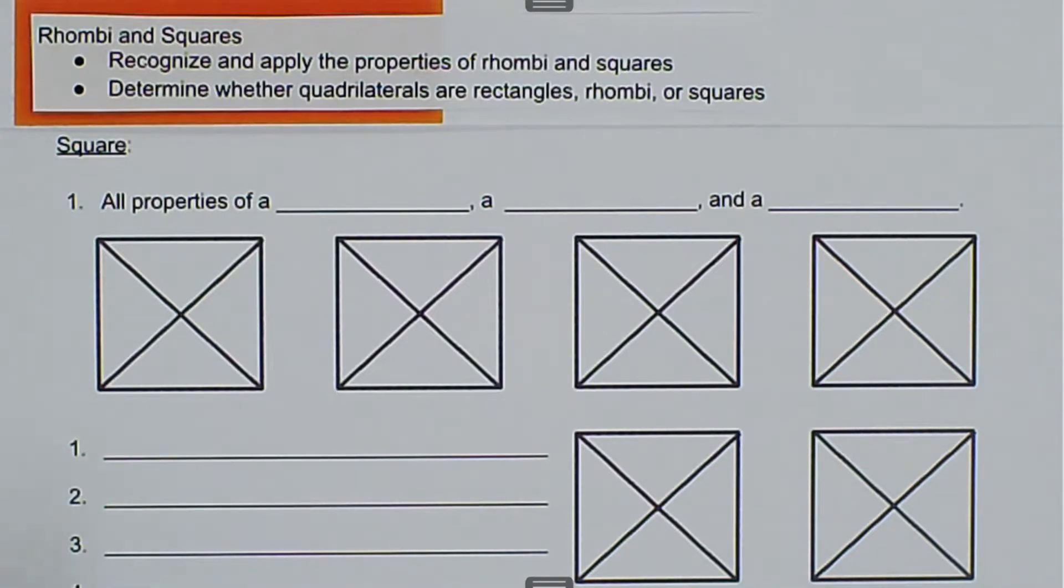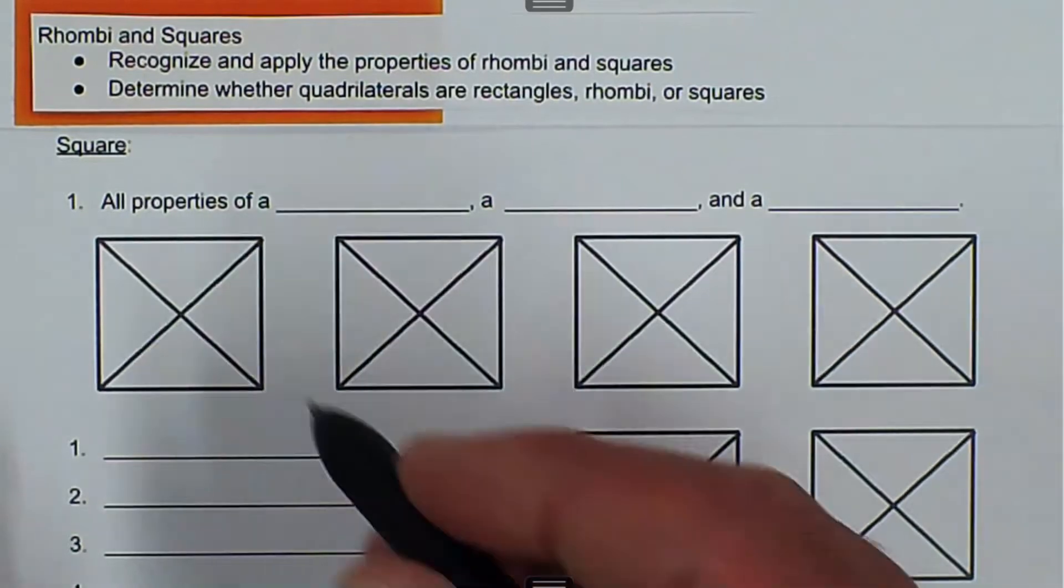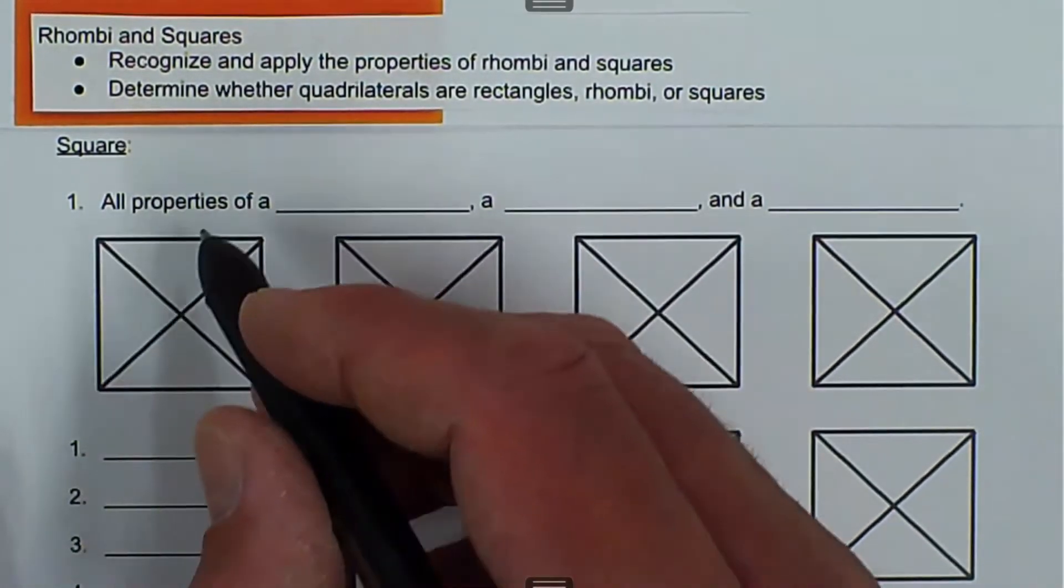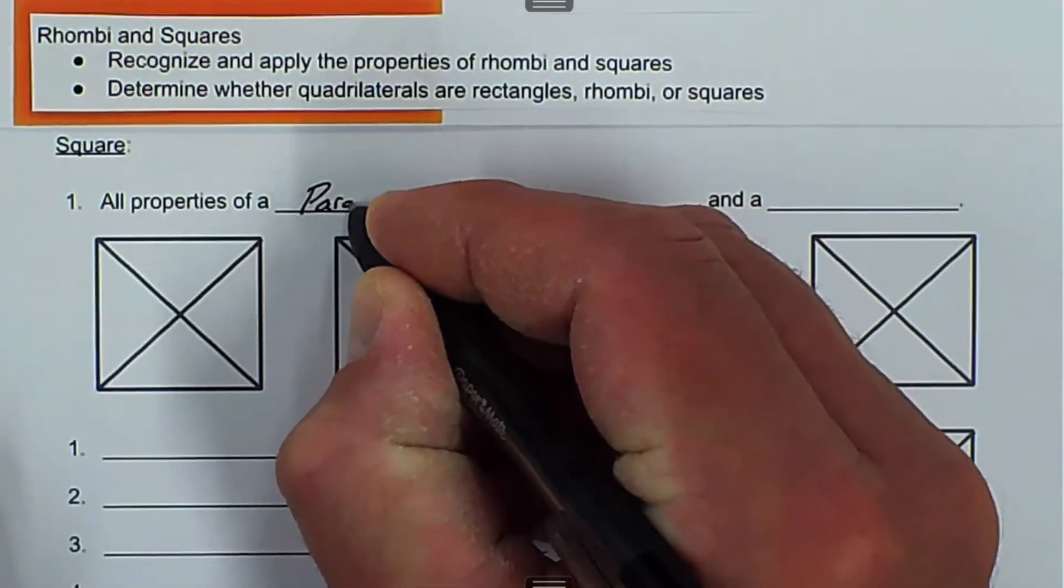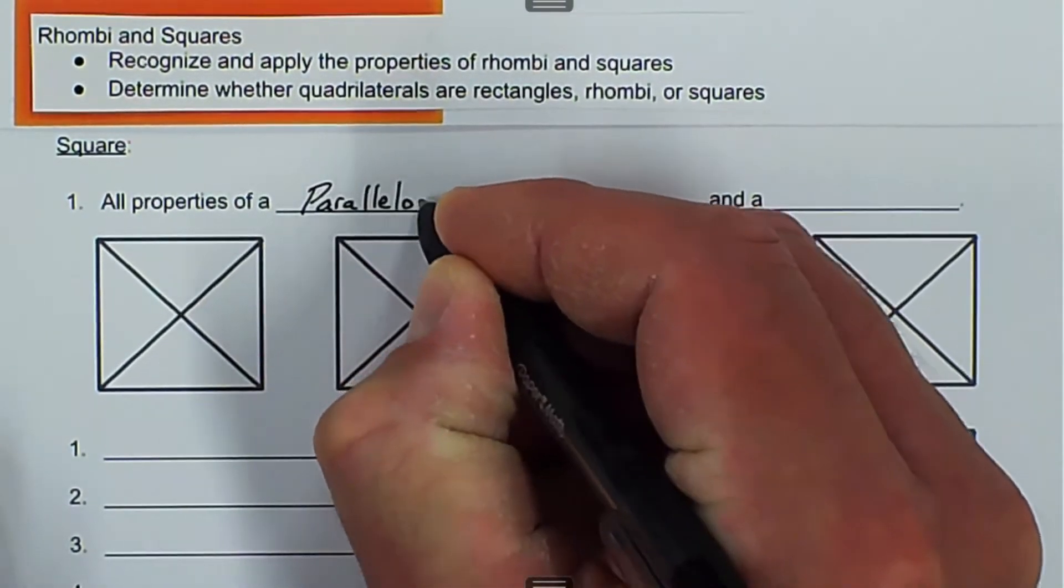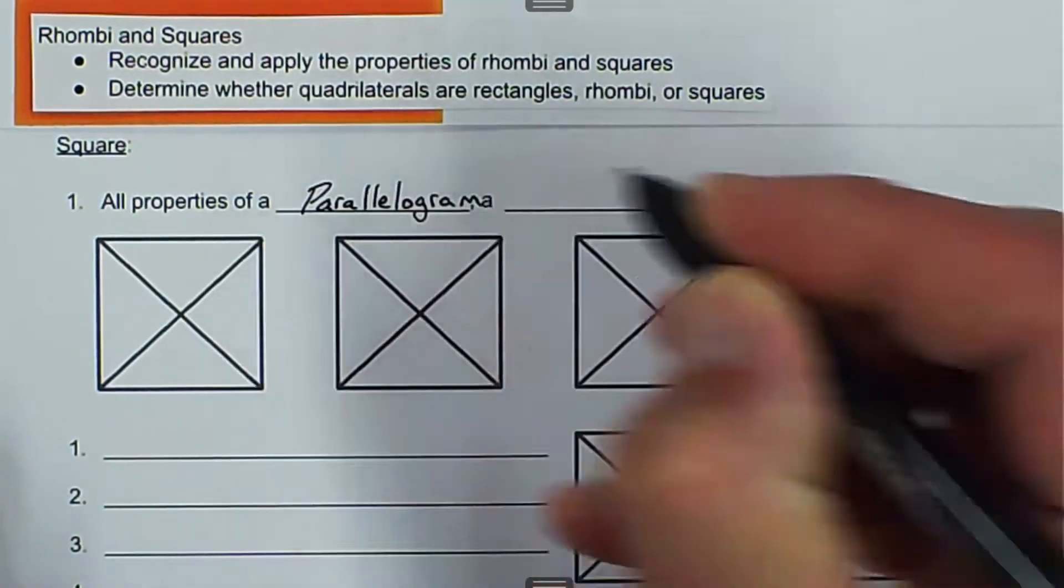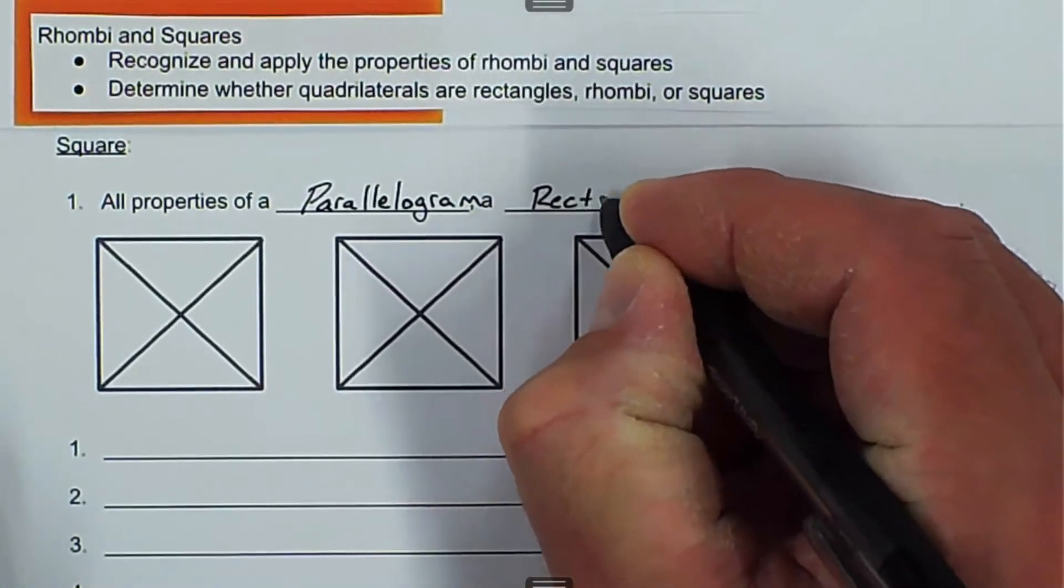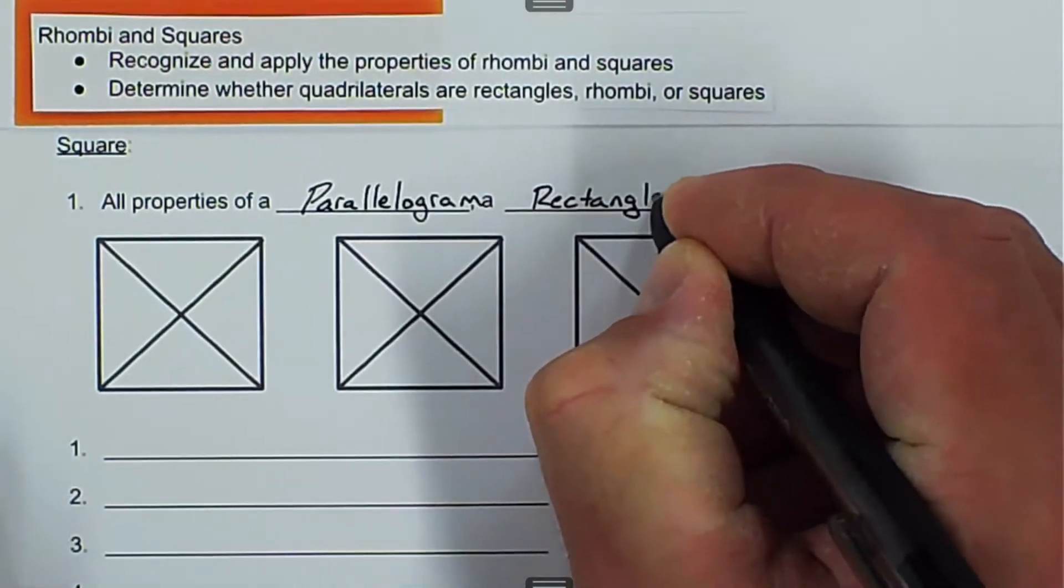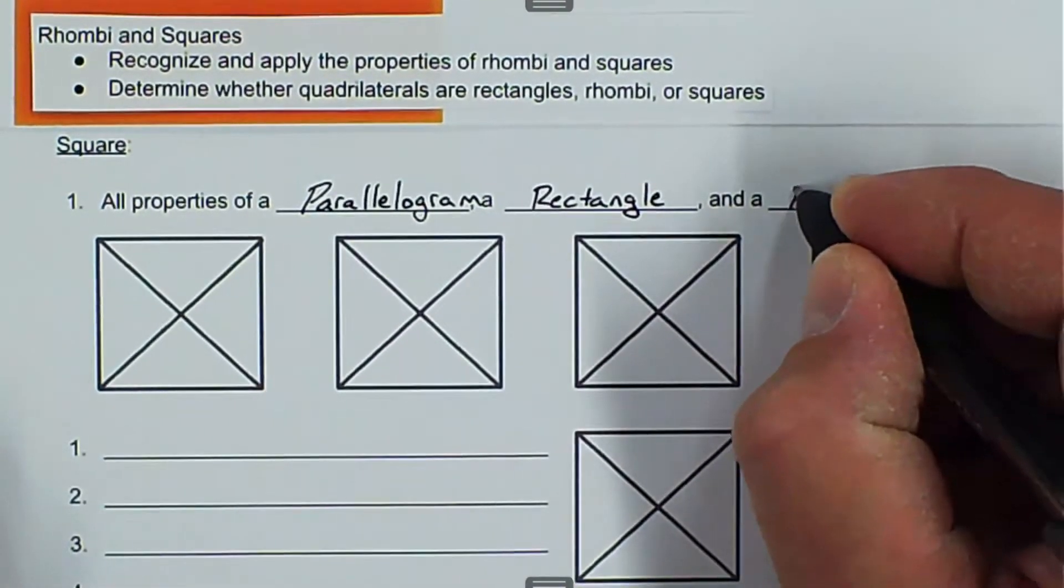The first thing we need to know about squares is that squares have all properties of a parallelogram, a rectangle, and a rhombus.